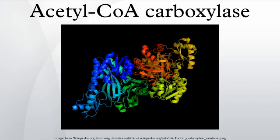Acetyl-CoA carboxylase is a biotin-dependent enzyme that catalyzes the irreversible carboxylation of acetyl-CoA to produce malonyl-CoA through its two catalytic activities: biotin carboxylase and carboxyl transferase. ACC is a multi-subunit enzyme in most prokaryotes and in the chloroplasts of most plants and algae, whereas it is a large, multi-domain enzyme in the endoplasmic reticulum of most eukaryotes. The most important function of ACC is to provide the malonyl-CoA substrate for the biosynthesis of fatty acids. The activity of ACC can be controlled at the transcriptional level as well as by small molecule modulators and covalent modification.